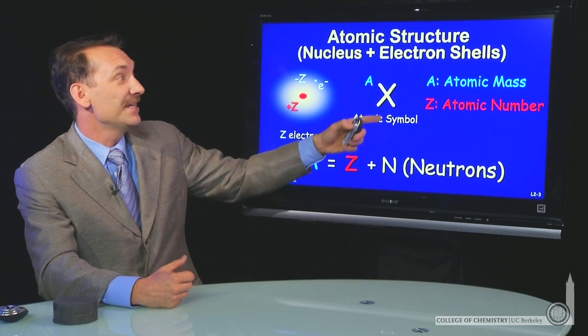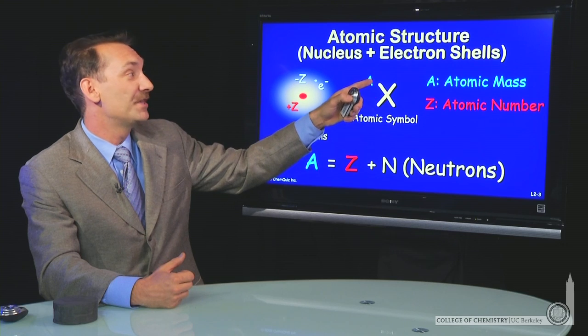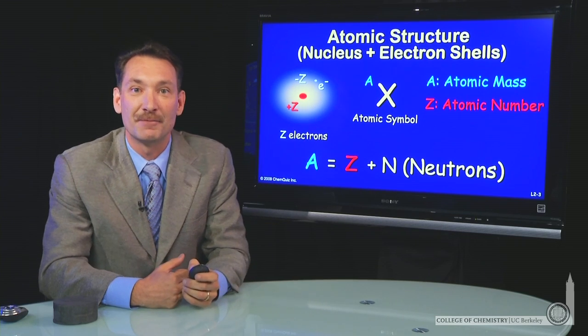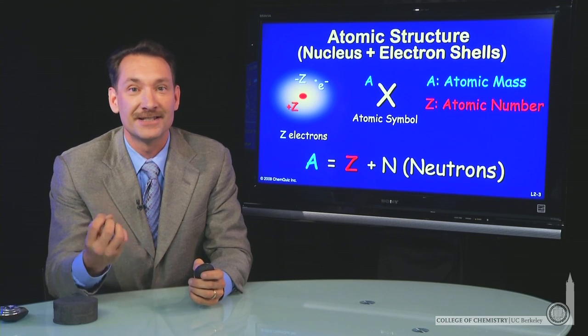So you'll often see an element written as its symbol with the atomic mass. The atomic mass is not unique, because the number of neutrons doesn't have to be unique.